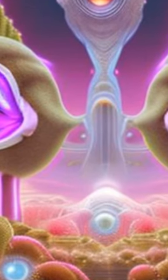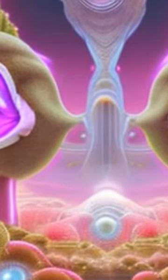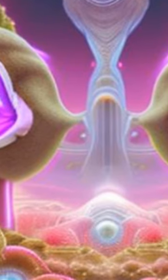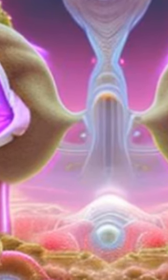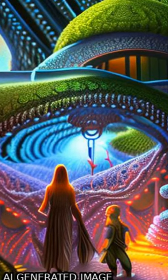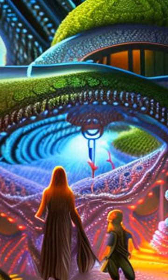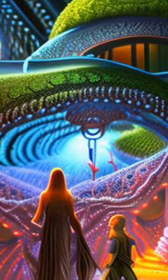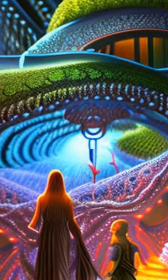Nanoparticles called Janus nanobullets were developed which contain both photosensitizers and magnetic materials. These particles can be targeted to tumors and then activated using light or heat, depending on the type of nanoparticle used.